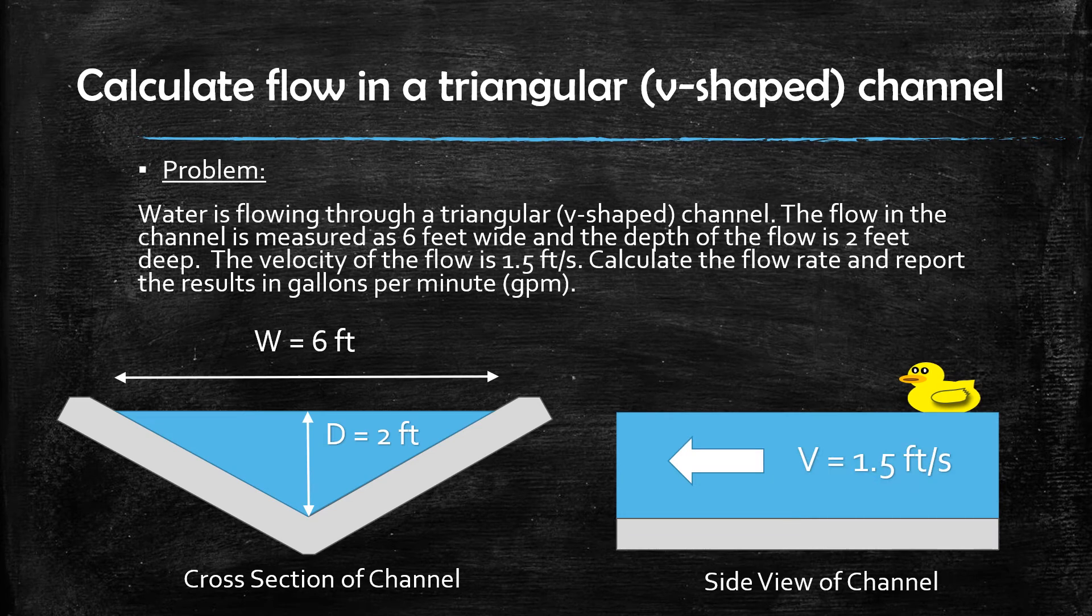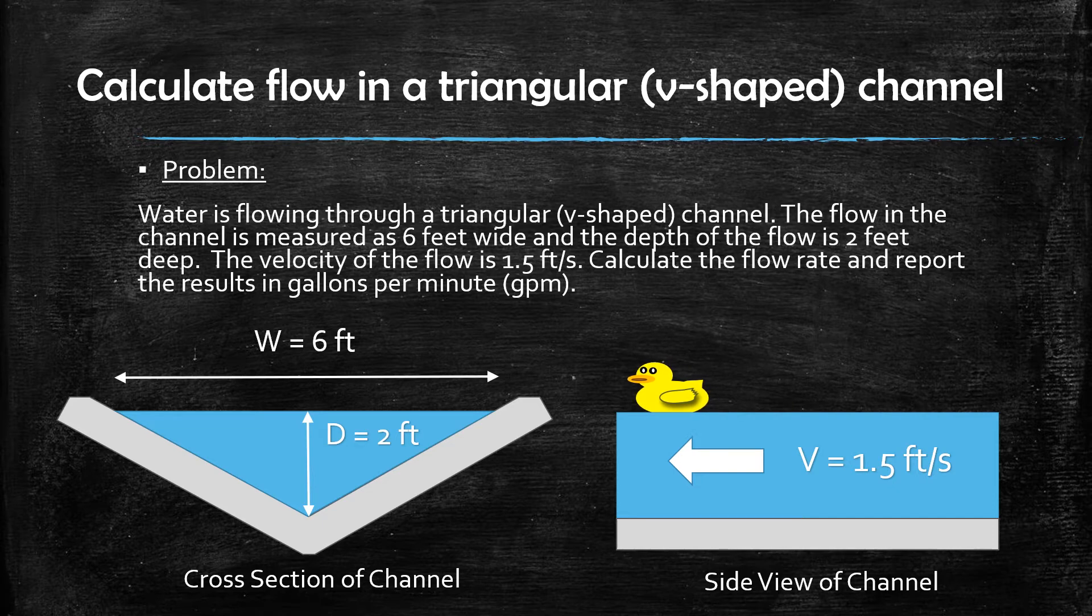We can also see from the side view that the velocity of the flow is 1.5 feet per second. A very common application for this type of channel are swales or small drainage ditches on the sides of roads or between houses.